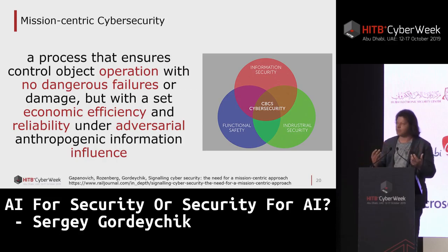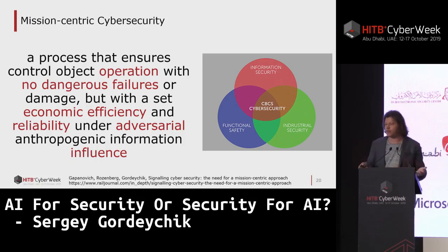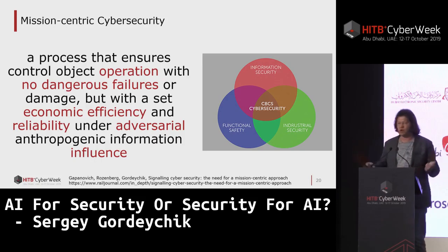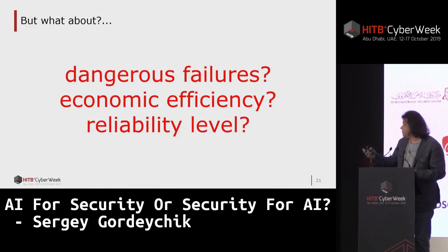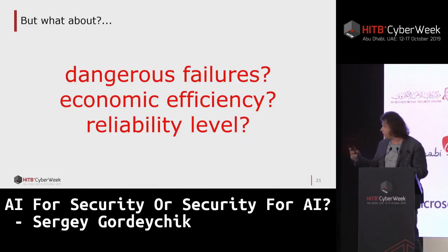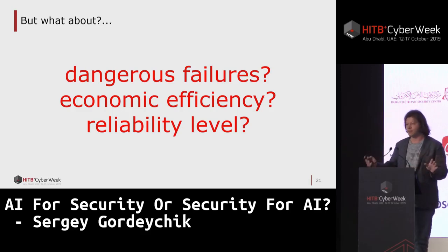Humans are actually smarter than just random noise. To protect from random noise you can use a codec or something like this. To protect against humans, you should use humans only. And what are dangerous failures, economic efficiency, and regulability if we discuss artificial intelligence? I will give you one example.